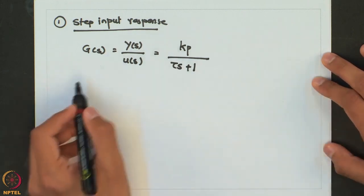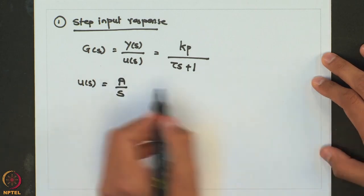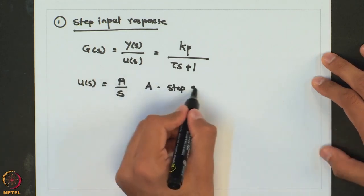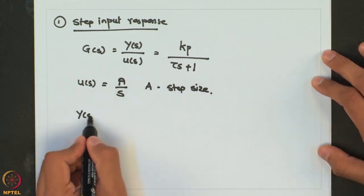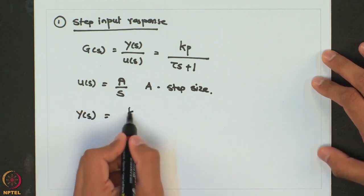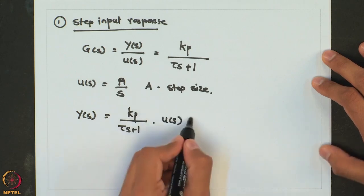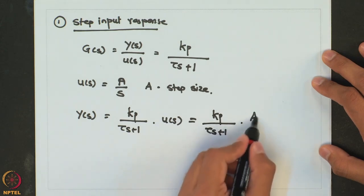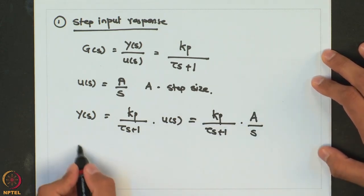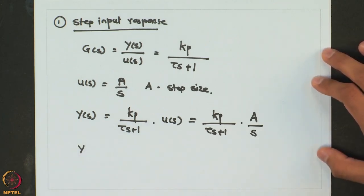We will look at the unit step response. The Laplace transform of that would be A over S, where A is the step size. So Y(s) will be Kp over (tau·s + 1) times U(s), which is Kp over (tau·s + 1) times A over S. That gives Y(s) = A·Kp over S·(tau·s + 1).